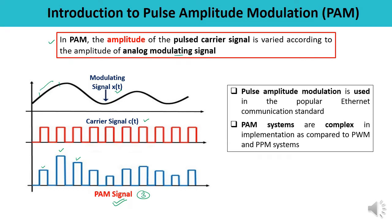Pulse amplitude modulation is commonly used in applications like Ethernet communication standards. The design of a pulse amplitude modulation system is relatively complex in comparison to other techniques like pulse width modulation and pulse position modulation.